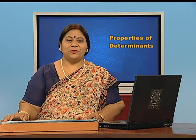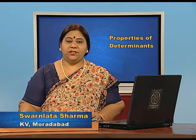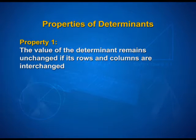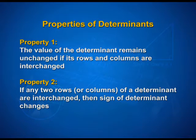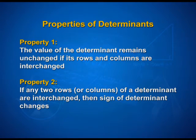Hello students. Today we shall study about properties of determinants. Let us start with the first property: the value of the determinant remains unchanged if its rows and columns are interchanged. Second property: if any two rows or columns of a determinant are interchanged, then the sign of the determinant changes.